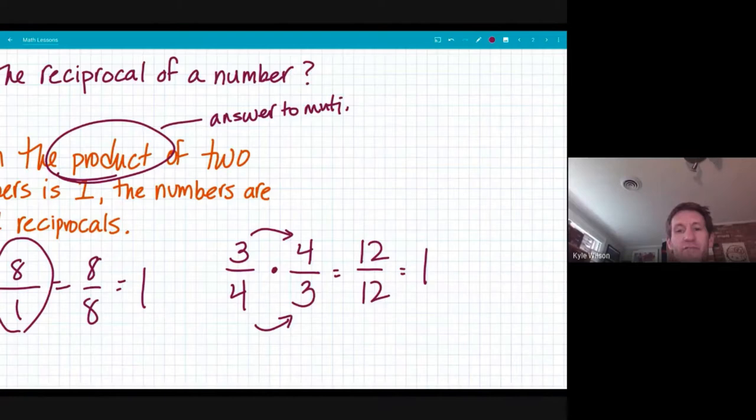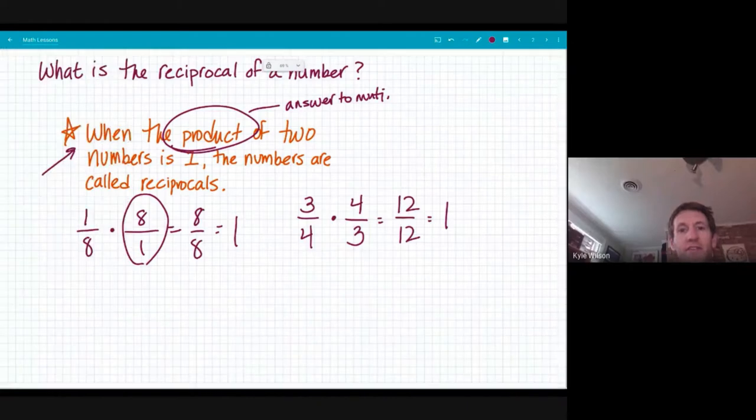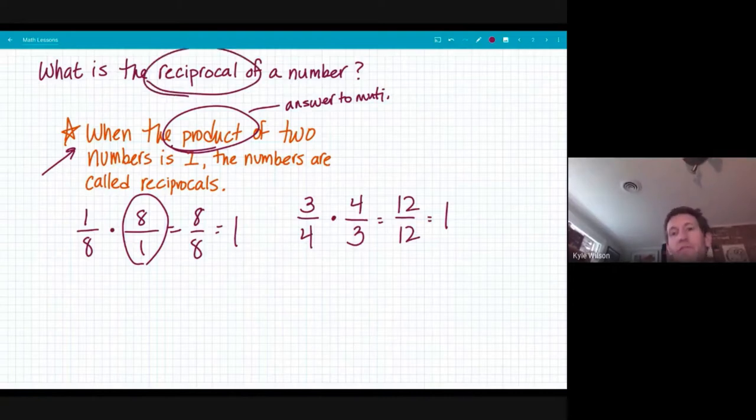So in a nutshell, if you haven't figured it out already, it's taking these two numbers and flipping their direction. But we are always going to be calling it the reciprocal, not the flip. That's the cheap way out. It is the reciprocal of a number.